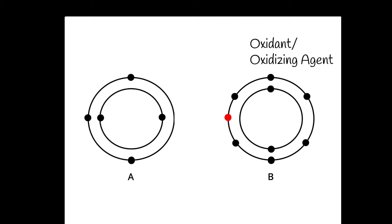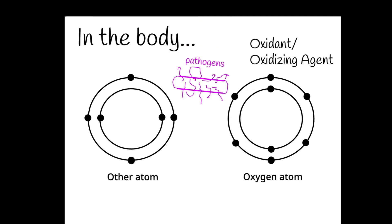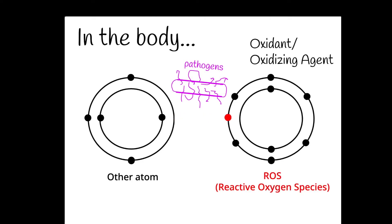Normally, when the body detects pathogens such as bacteria or viruses, oxygen atoms in the body oxidize other atoms to gain an electron and become reactive oxygen species known as ROS, which act as cell signaling molecules that help fight the pathogens.